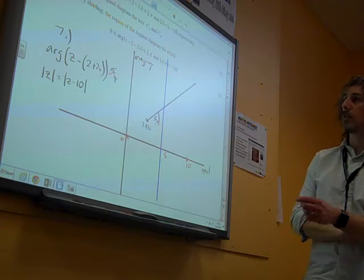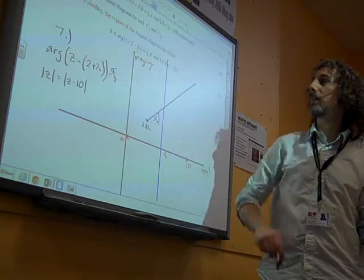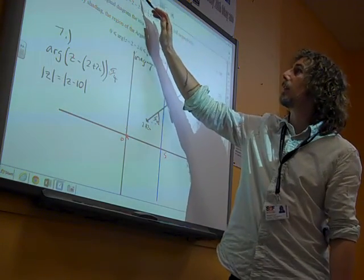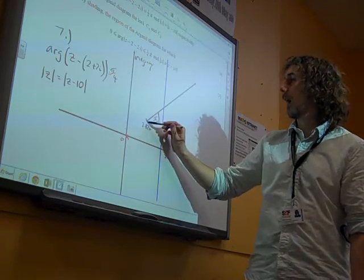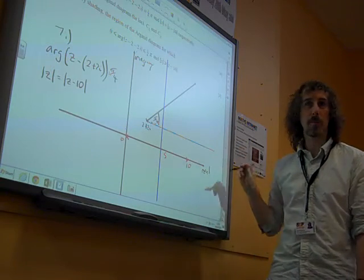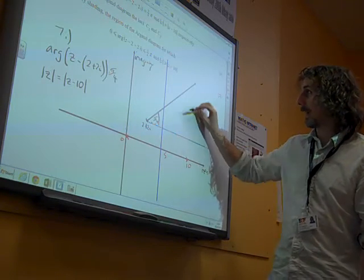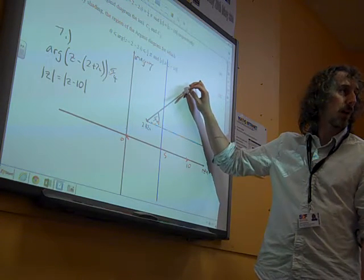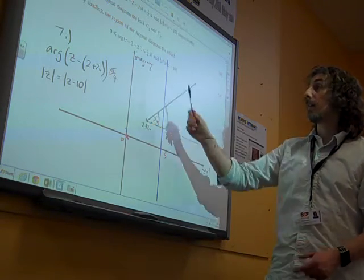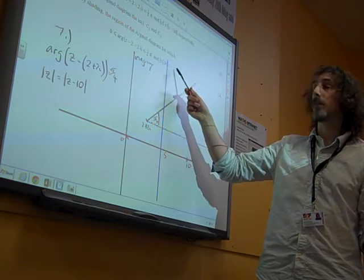Right. Indicate by shading the region of the Argand diagram for which this and this are both true. So the argument is between 0 and pi by 4. Well, I think to illustrate that, I'm going to need to show a line that represents 0. So I'm just going to kind of dot in my 0 line. So the argument is between there and pi by 4. So it's between that line and this line here. Now, there's only two regions it could be. It's either that bit there or this bit over here. The next bit is that the modulus of z needs to be greater than the modulus of z minus 10.